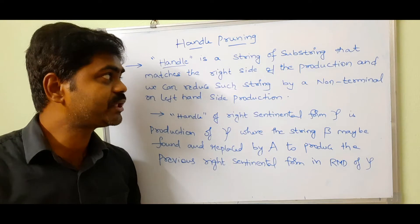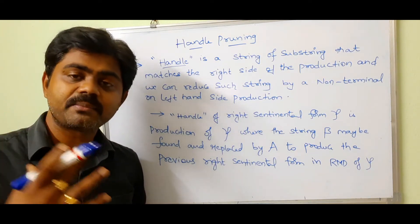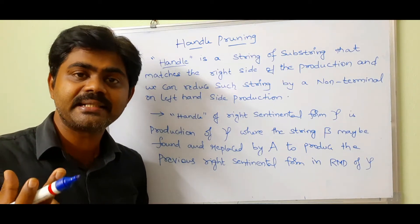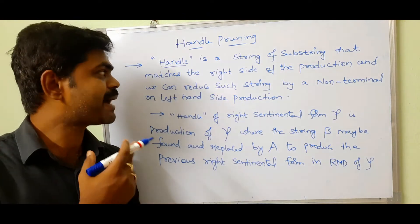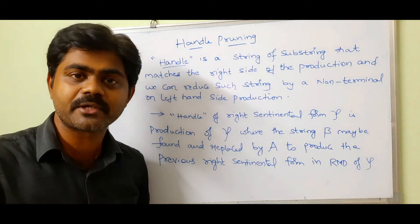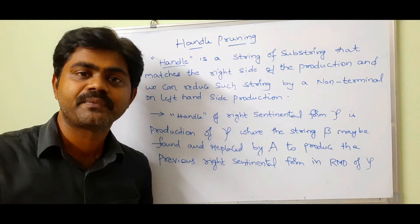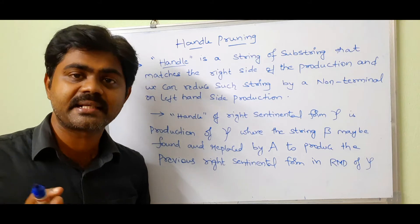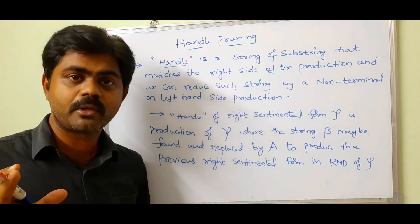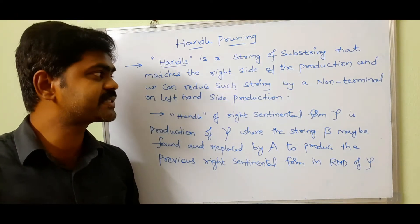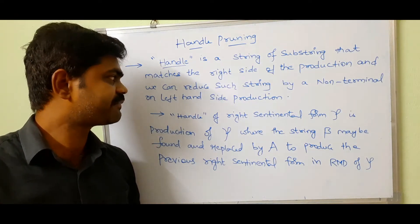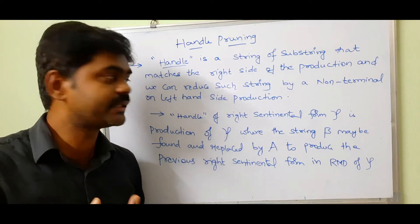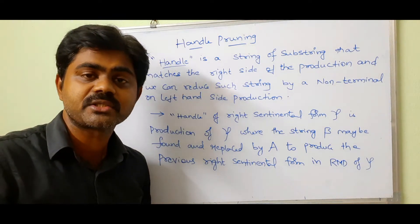So what's a handle? A handle is a substring. For example, if we have a continuous string and we want to make that string into a substring. A handle is a string or substring that matches the right side of a production. What exactly is the right side of a production? For example, if I have S → AB, then S is the left-hand side and AB is the right-hand side. So we can reduce such a string by a non-terminal on the left-hand side of the production. That is what a handle is all about.